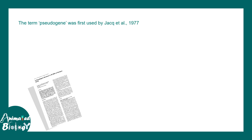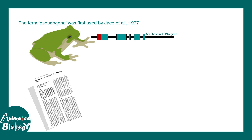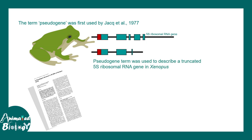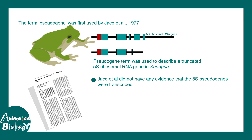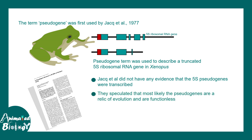Pseudogenes were first discovered by Jack et al. in 1977 from Xenopus. In Xenopus, the 5S ribosomal RNA gene has a pseudogene, and this particular pseudogene was identified by Jack et al. They didn't know at that point what the function of these genes was. These days it is known to be involved in immune function. At that time they couldn't identify a function, so they thought pseudogenes are genes which have structural similarities with a normal gene but are functionless — essentially evolutionary relics.